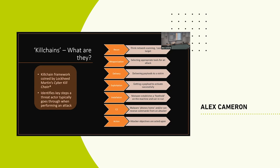C2 — command and control — is the phone-home part. The malware is installed on the machine and can send requests back to the attackers. It's an open communication channel: the attacker can send attack plans to the infected victim, and the victim machine can send data back. Then action is where the attacker actually does what they want — extracting information, starting a crypto miner, things like that. The earlier stages are all means to an end of executing something on the target machine.